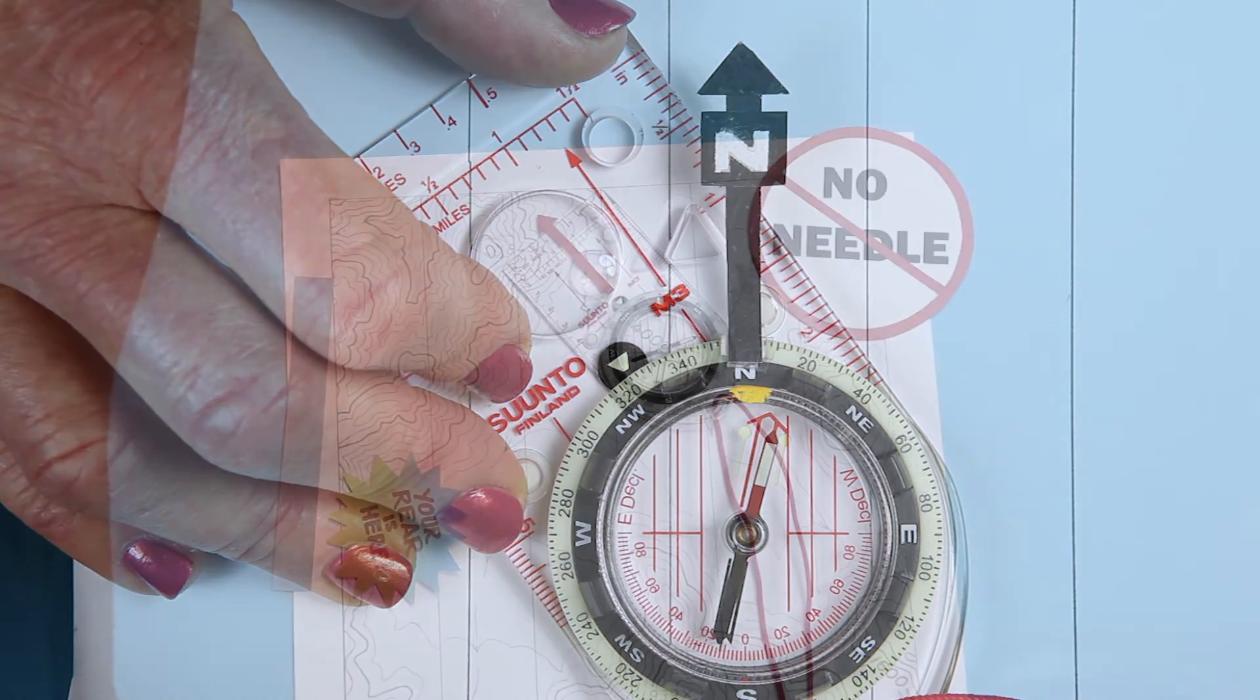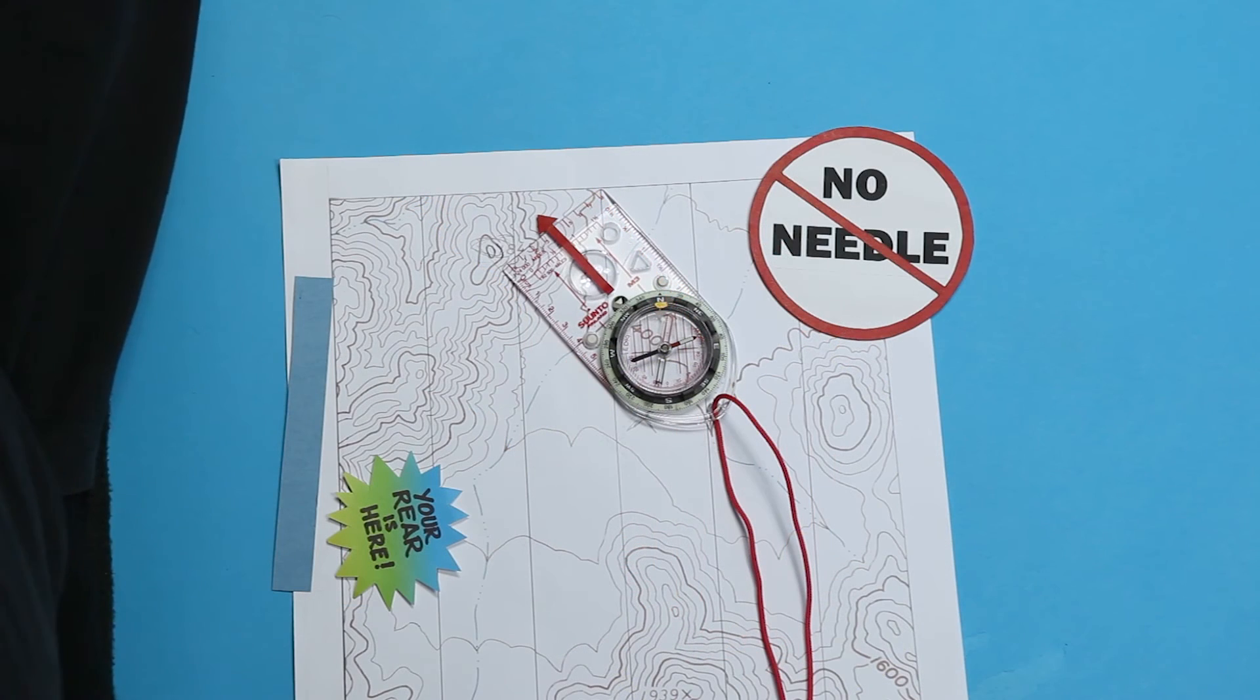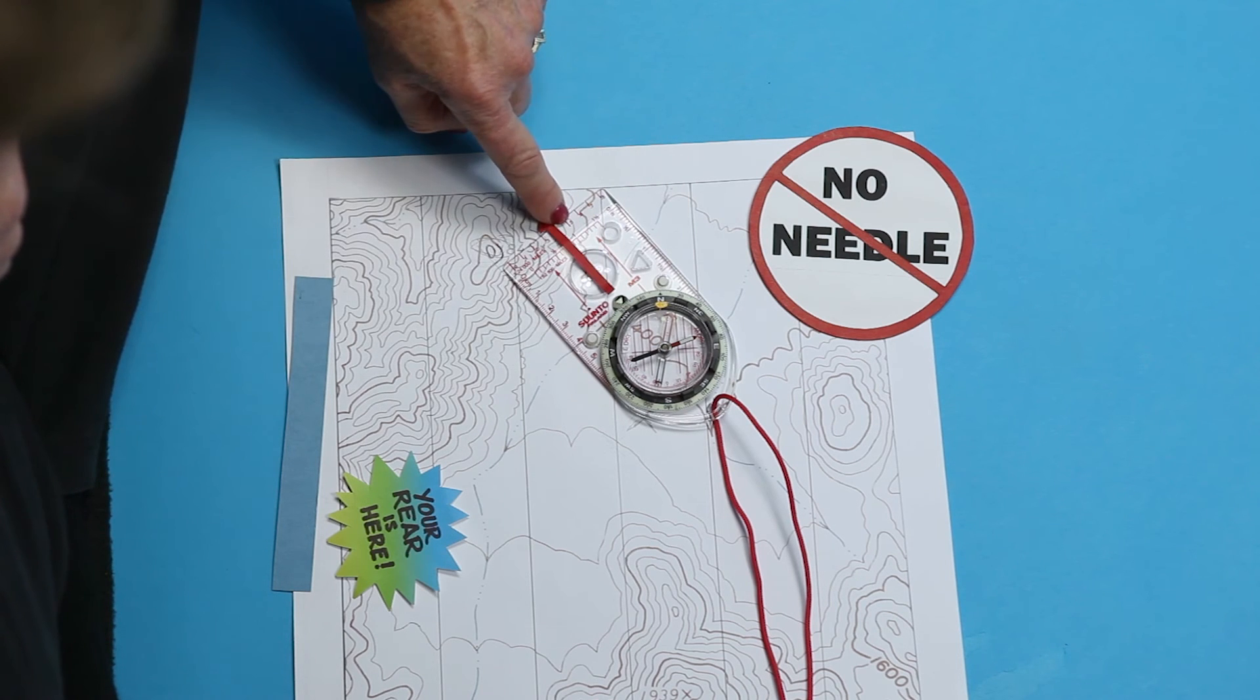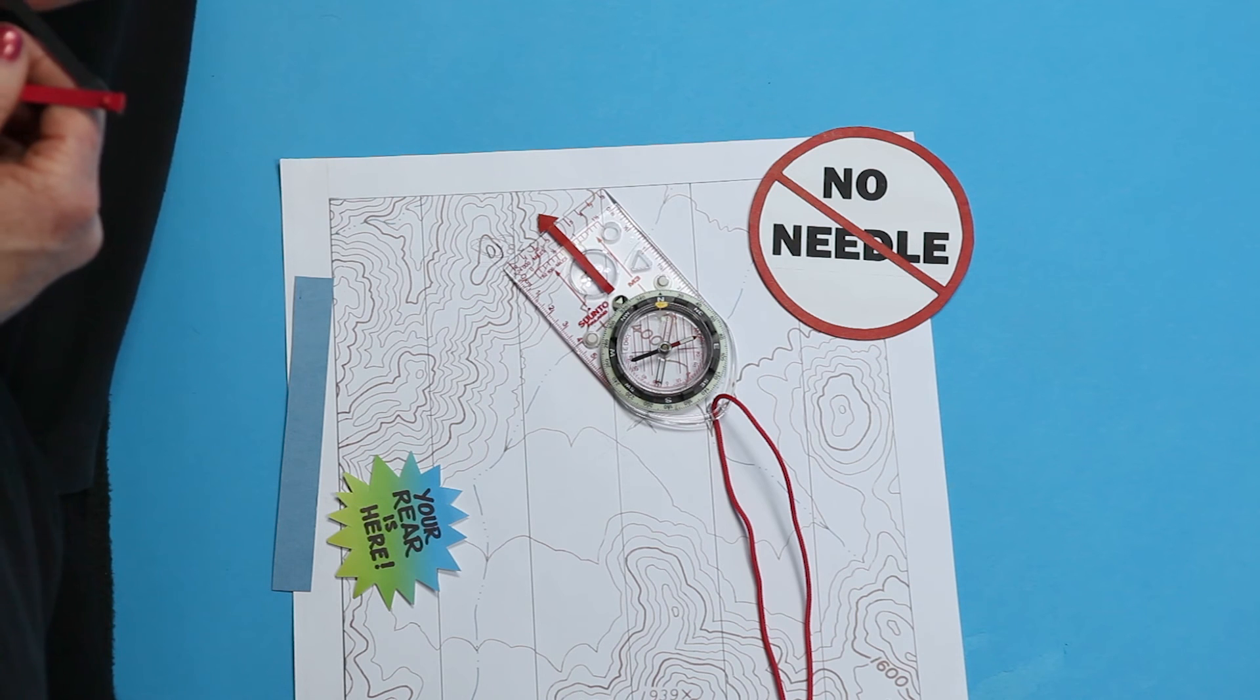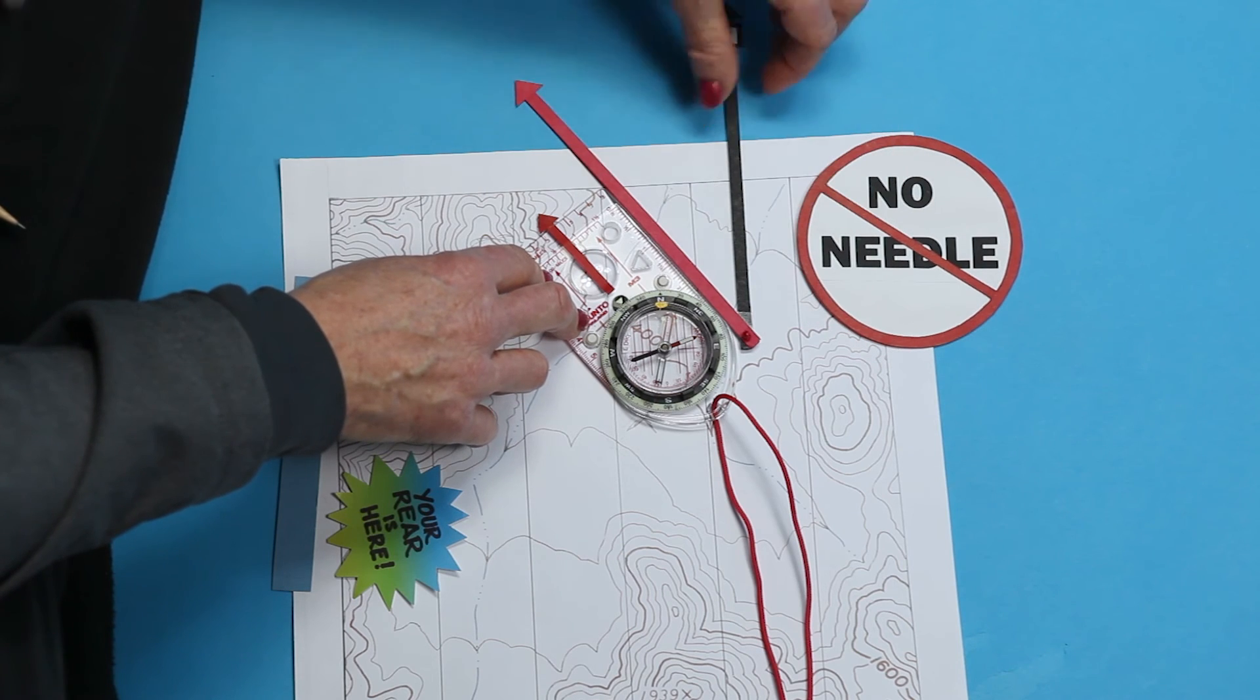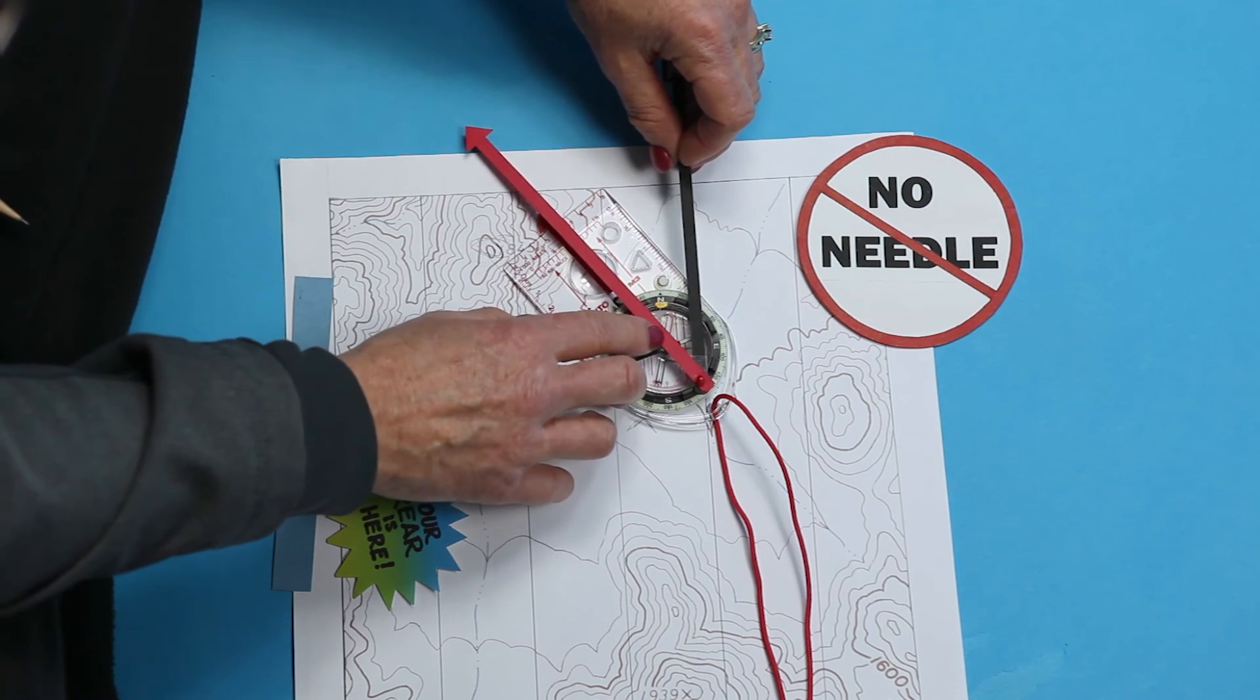Here's something else to notice. On the map, you're using the side of the base plate instead of the direction of travel arrow for the line that points in the direction you want to travel. The angle is the same because the side of the base plate is parallel to the direction of travel arrow. Do you see that the angle is the same?